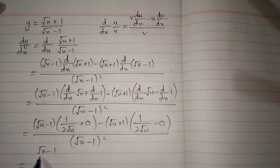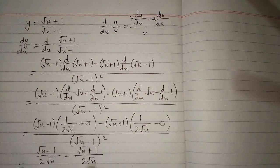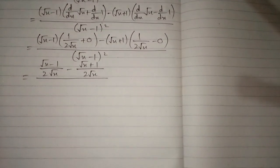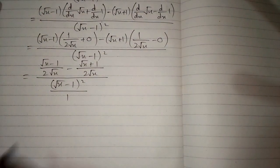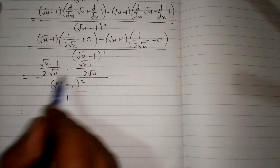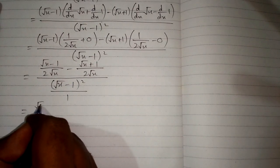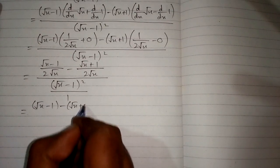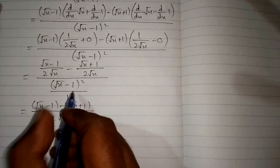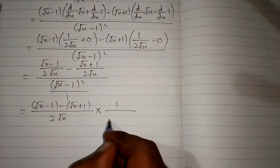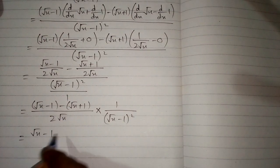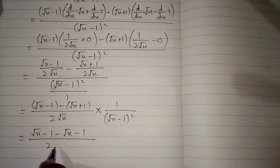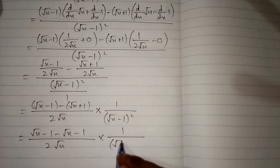Now this can be written as square root of x minus 1 upon 2 square root of x, minus square root of x plus 1 upon 2 square root of x, in the denominator we have square of square root of x minus 1. Now in the numerator we have two fractions and the denominators are same so we can add the numerators. The fraction in the denominator can be written as 1 upon square root of x minus 1 whole square. Now we have square root of x minus 1 minus square root of x minus 1, upon 2 square root of x, multiplied by 1 upon square of square root of x minus 1.